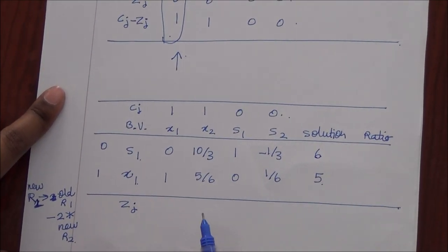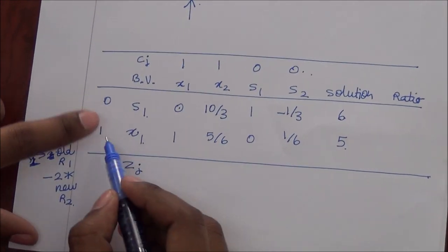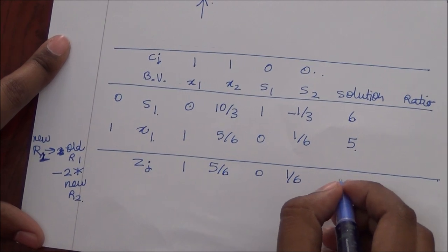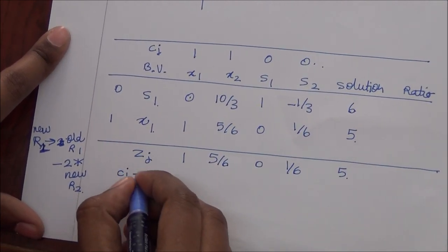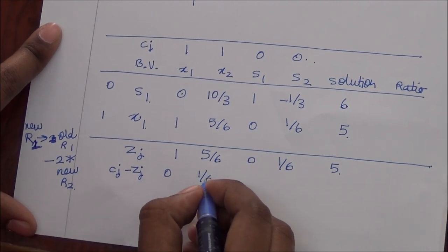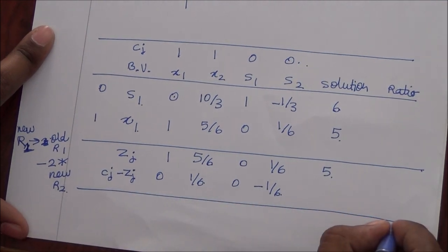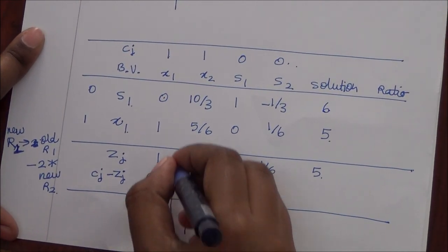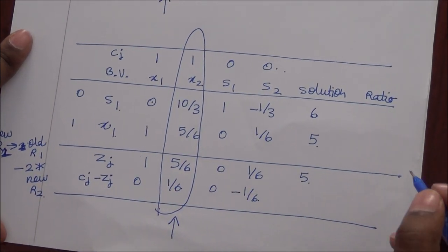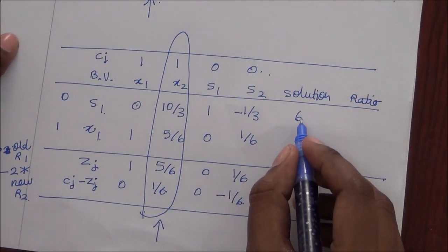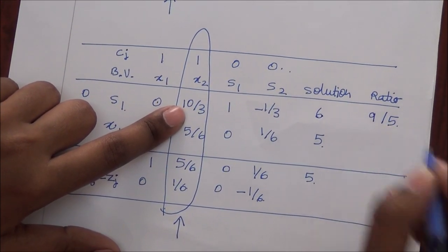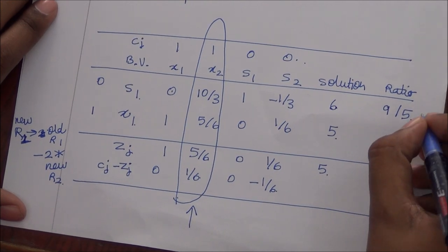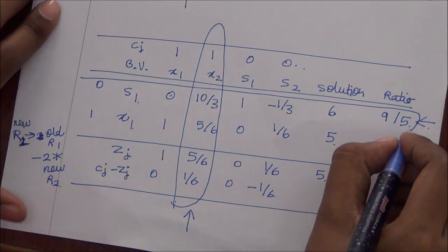Now we calculate the value of zj as done in the previous iteration — that is, 0 into 0 plus 1 into 1. We then calculate cj minus zj. As this is a maximization problem, we choose the maximum value of cj minus zj, which is 1 by 6, and hence determine the pivot column. Now we compute the ratio: 6 divided by 10 by 3 gives us 9 by 5, and 5 divided by 5 by 6 gives us 6. Here 9 by 5 is the smaller value, so we choose that as the pivot row.